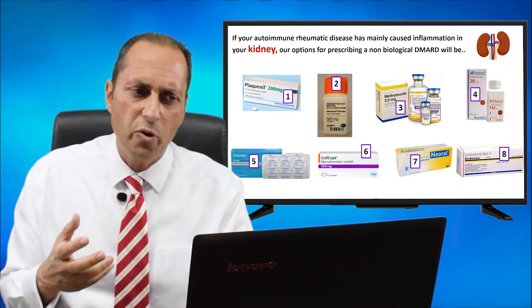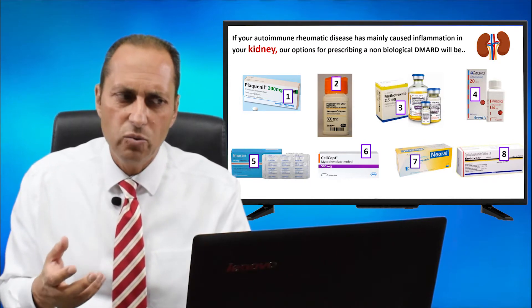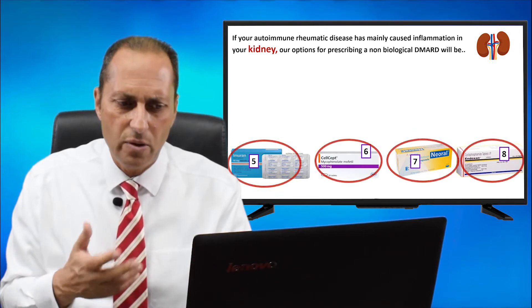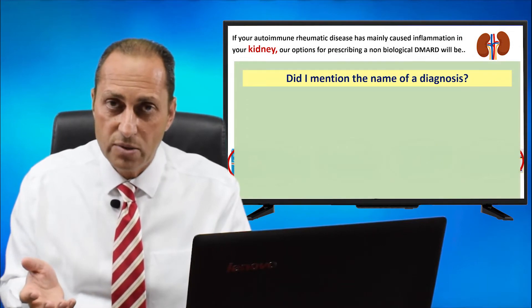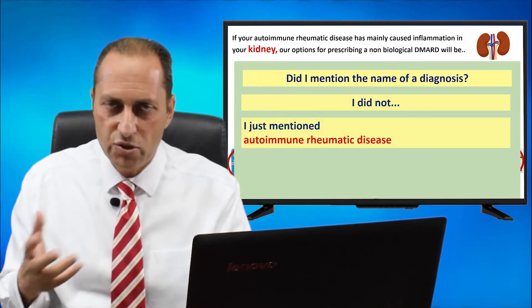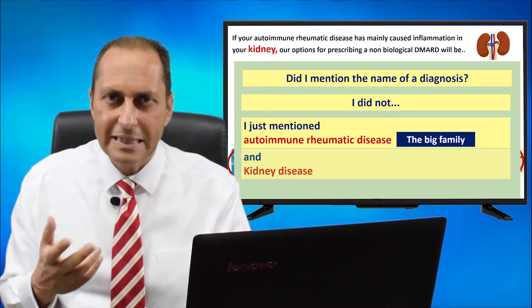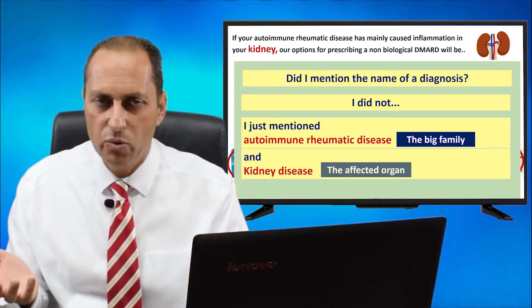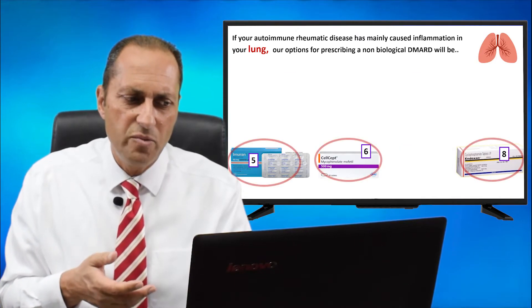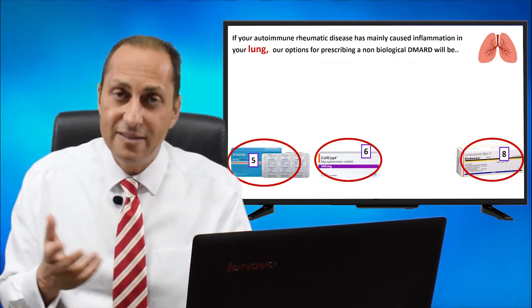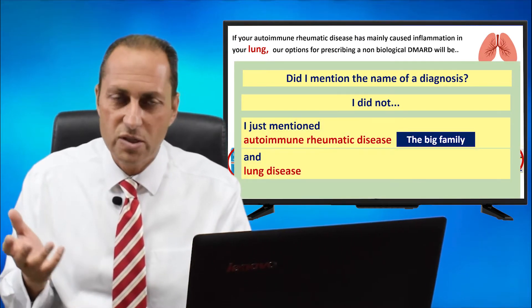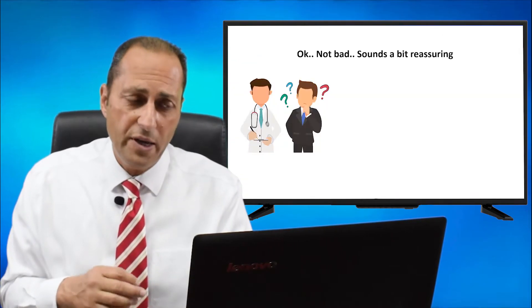If your autoimmune rheumatic disease has caused inflammation in the kidney — nephritis — our options for prescribing a non-biological DMARD will be Imuran, Cellcept, Neural, or Endoxan. Again, no specific diagnosis name is needed — just autoimmune rheumatic disease in general and kidney disease as the affected organ. If it affects the lung, our options will be Imuran, Cellcept, or Endoxan. Autoimmune rheumatic disease is the big family, and lung disease is the affected organ.